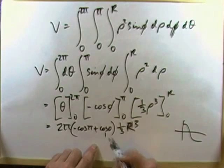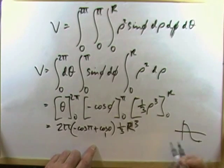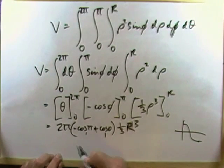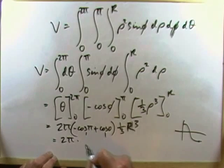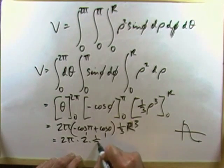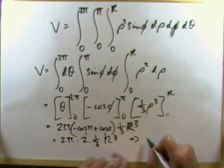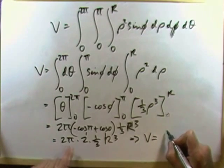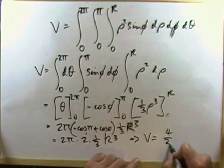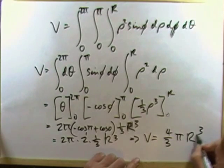Well I know what my cosine looks like. Cos of zero is one. Cos of pi is negative one. So negative negative one is one. So I've got two pi times two times a third r cubed. Giving me my final answer: V equals four over three pi r cubed.